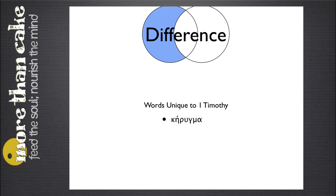So what this would be good for is, say, I've already taken a class in 1 Timothy, and now I'm going to take a class in Titus. I only really want to focus on words that are new to my vocabulary — I don't want to create a whole list of words I've already studied or mastered in another class. Since I've already taken 1 Timothy, Titus would be my primary list, and I would use the Difference from my list in 1 Timothy. Now my Greek study would be focused only on words unique to the new course I'm going to take.